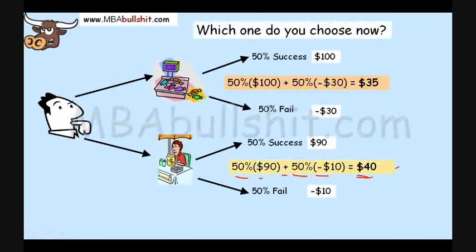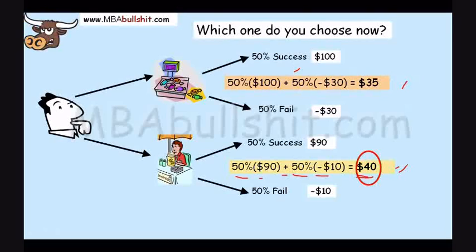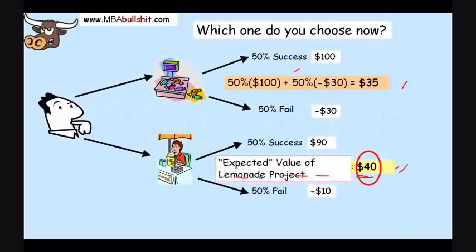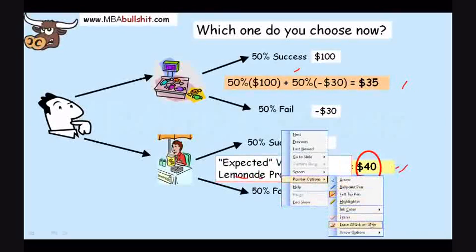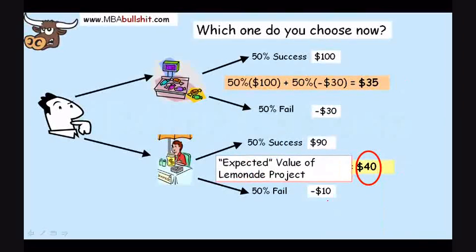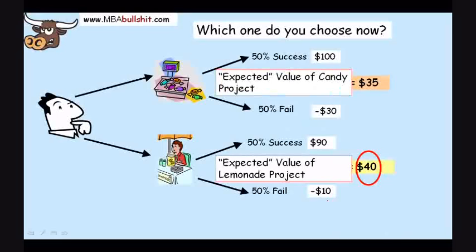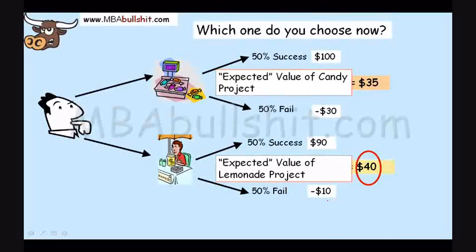So now, which one would you choose? Would you choose the $35 or would you choose the $40? Obviously, you would choose the $40. This $40 is what we call the expected value of the lemonade project, and the expected value of the candy project is $35. Since we're choosing a business, we choose the bigger one — the one with the bigger expected value.